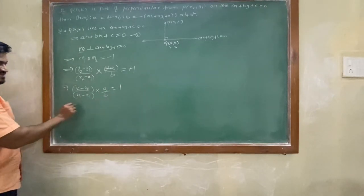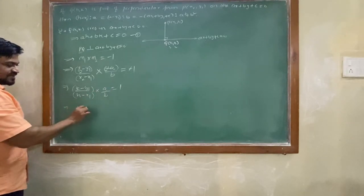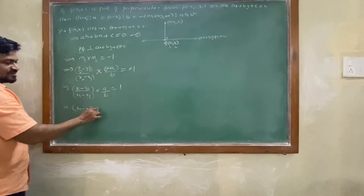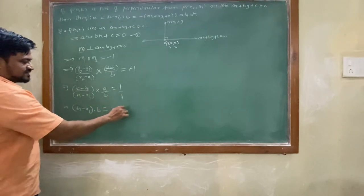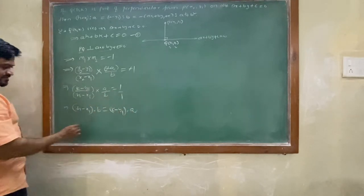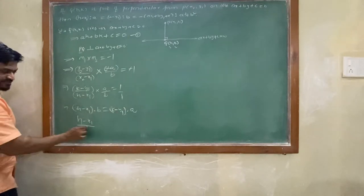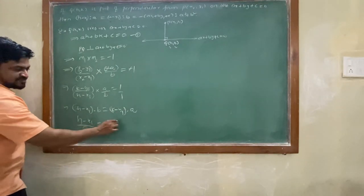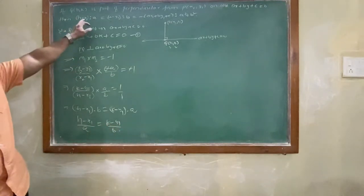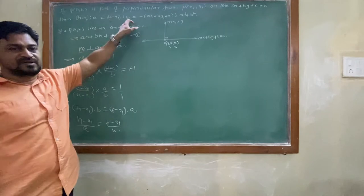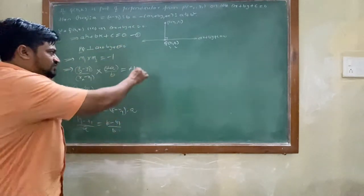Cross multiplying, (h-x1)·b = (k-y1)·a, which gives (h-x1)/a = (k-y1)/b. We got the answer for the first two terms, but there is a third term also, so we need to handle that.